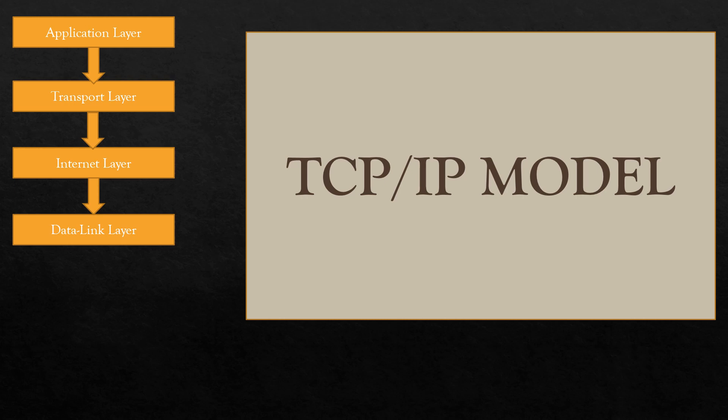The data link layer is the second layer of the TCP/IP model. It deals with data in the form of data frames and mainly performs data framing, in which it adds header information to the data packets for the successful delivery of data packets to correct destinations. The physical layer is the lowest layer of the TCP/IP model. It deals with data in the form of bits and handles host-to-host communication in the network. It defines the transmission medium and mode of communication between two devices, which can be wired or wireless.